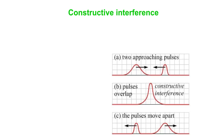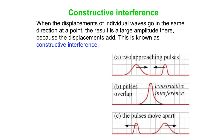What about constructive interference? The picture indicates that — we've got two approaching pulses. When they overlap, the size of the resultant is bigger than what either one of those two things were. In fact, it's simply the sum of those two things. And then afterwards, the pulses move apart as if they never met. We call it constructive interference when the displacements of the individual waves go in the same direction, and the result is a large amplitude.